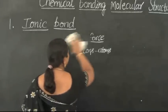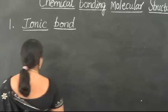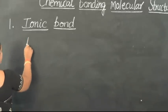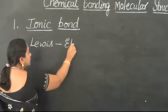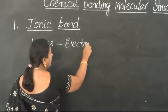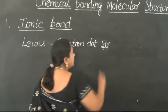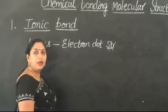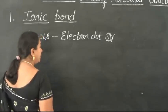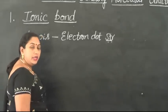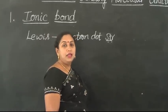The force of attraction which binds the constituents of the compound together is referred to as a bond, and the phenomenon is referred to as bonding. Now let us take up the formation of the ionic bond. In order to simplify the understanding, Lewis has given us what is called the electron dot structure. With the electron dot structure, the concept of bond formation can be well understood. The electron dot structure is used to indicate the number of valence electrons present in an atom.